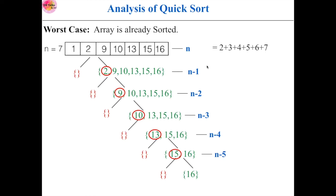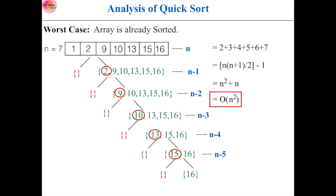The total time complexity is the sum of these times: level 0 gives 7, level 1 gives 6, level 2 gives 5, level 3 gives 4, level 4 gives 3, level 5 gives 2. This is the sum of the first n natural numbers, but starting from 2, so subtract 1. In Big O notation we ignore constant terms, giving n² + n, and we consider only the higher order term. So the time complexity of the worst case is O(n²).